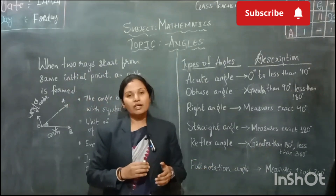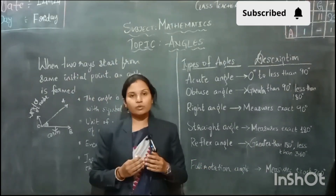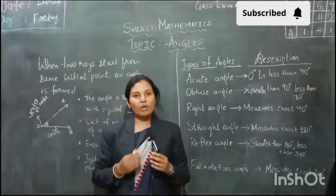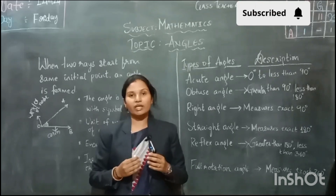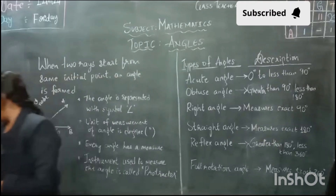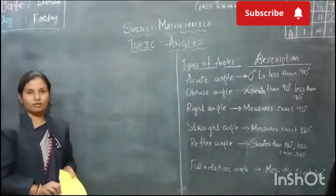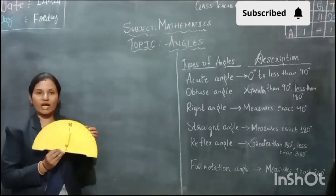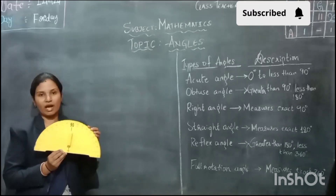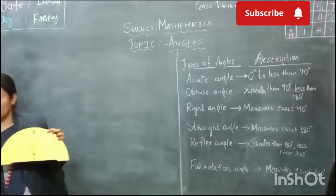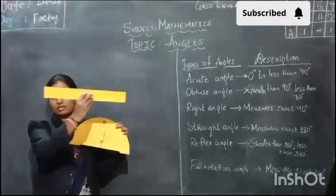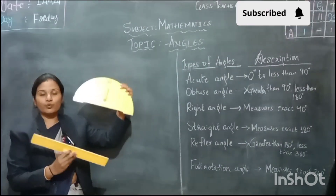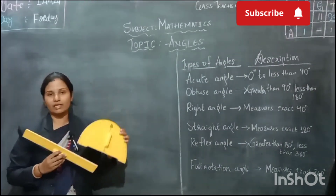Now that we have discussed the types of angle, let's use the instrument called a protractor and scale to measure different types of angles. This is the instrument called a protractor, which we use to measure an angle. We also need a scale. This is the scale and this is the protractor, by which we are going to measure different angles.